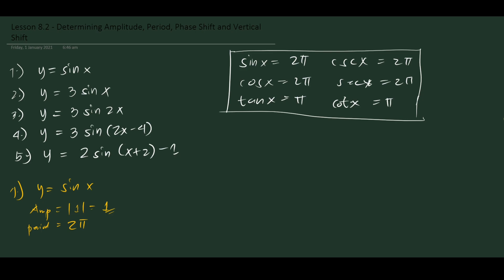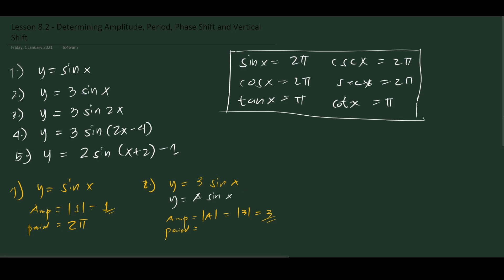Now let's introduce some transformations. For number 2, y = 3 sin x. This is of the form A sin x, so the amplitude is the absolute value of A, which is the absolute value of 3, equal to 3. The period will still be the same, 2π, because the period is only modified when a number is multiplied by x — which is not the case here.